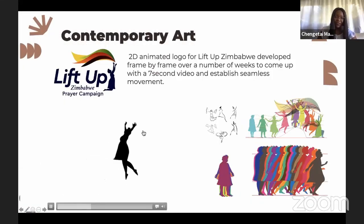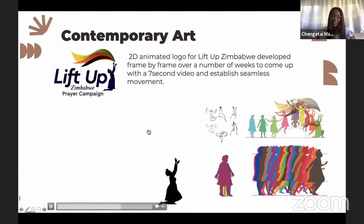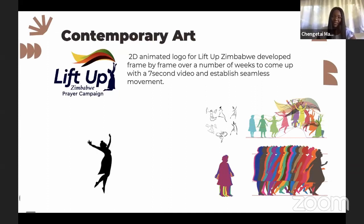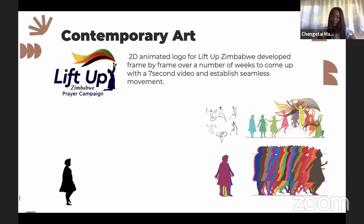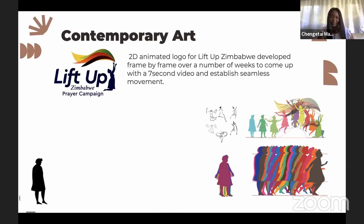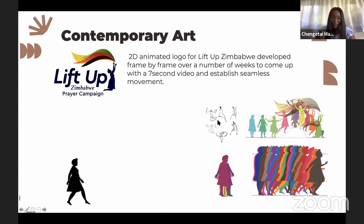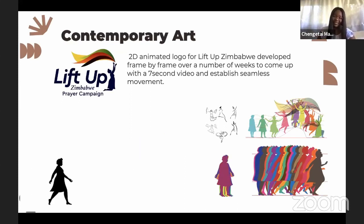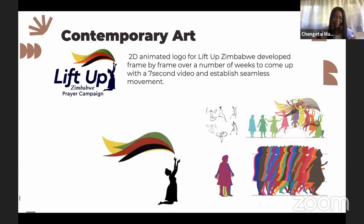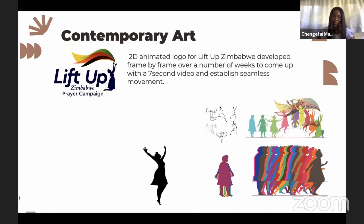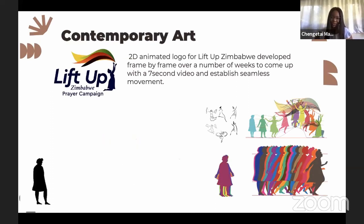For contemporary art, we've got a 2D animated logo for Lift Up Zimbabwe, developed frame by frame over a number of weeks to come up with a seven-second video establishing seamless movement. I worked on this one, trying to follow the principles laid out for illustration and animation — the same principles used to create the initial animated 2D movies. In the middle, we've got a black and white sketch of different positions. When it comes to sketching, it's a lot of freehand — your hand has to be loose, and it helps in building the illustrations you'll be working on.